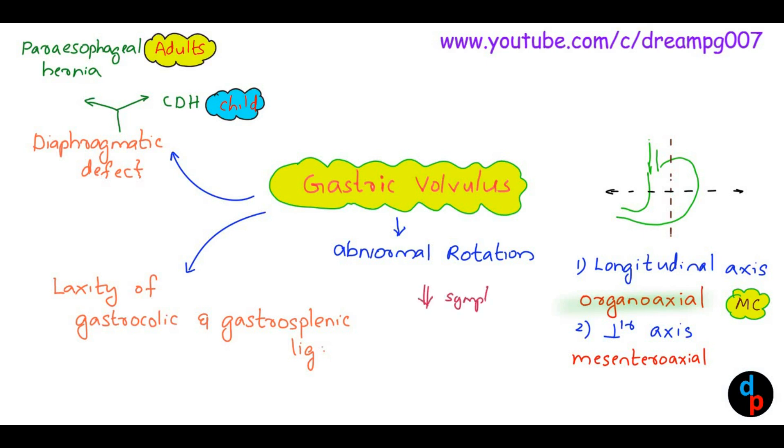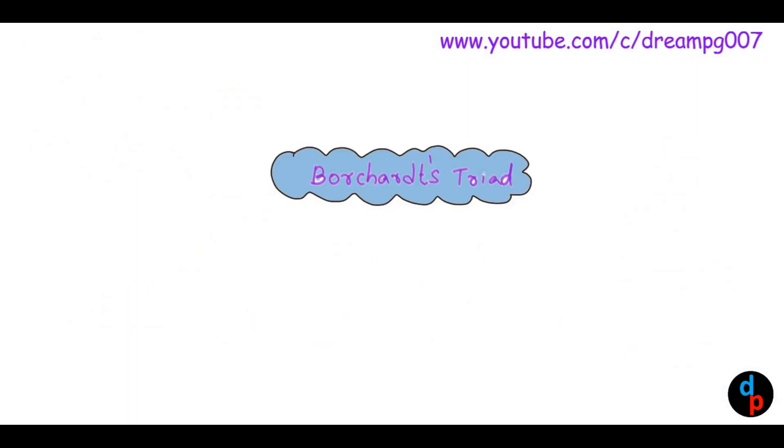The gastric volvulus is associated with abdominal pain. The classic triad seen in gastric volvulus is Borchardt's triad. It includes epigastric pain, retching with vomitus, and the inability to pass nasogastric tube.